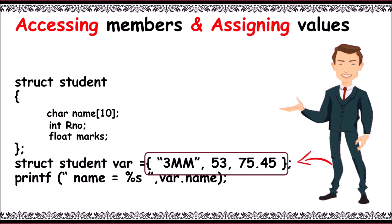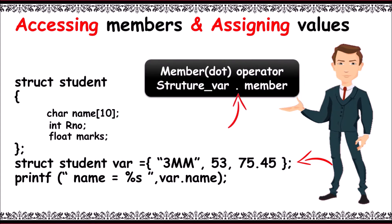The member or dot operator is used to denote members of variables - that is, structure variable dot member. Here we write var.name, which prints 3MM.